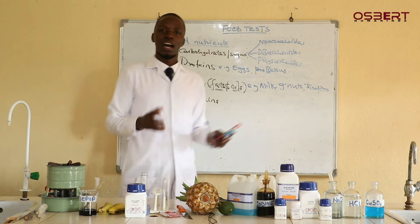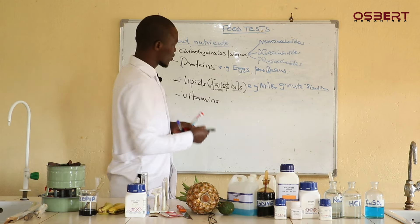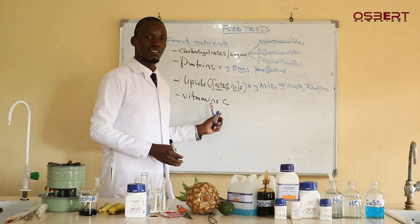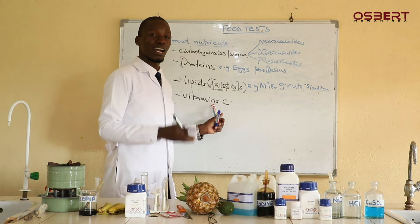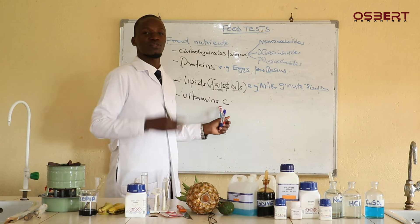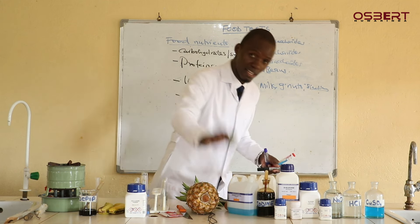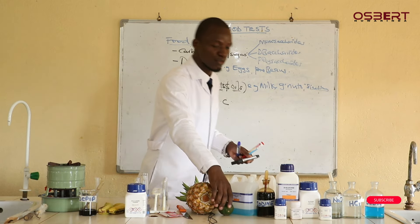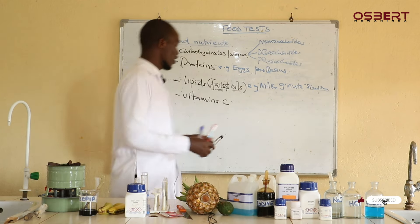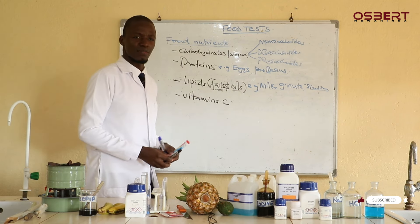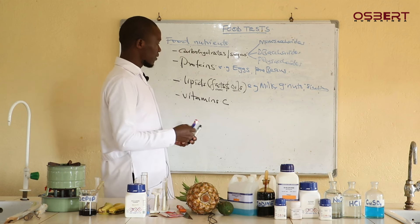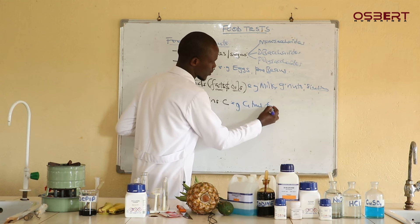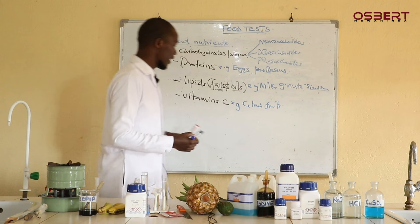In this series, we are going to explore vitamin C specifically. Vitamin C — also called ascorbic acid — is found in citrus fruits. Fruits like lemon here. We are going to find out how we test for vitamin C in citrus fruits and other foods. Most fruits have vitamin C. So we are going to expound more about vitamin C, which is found in citrus fruits.